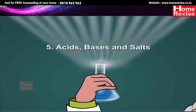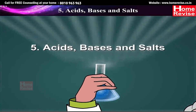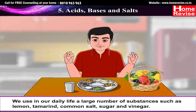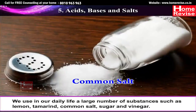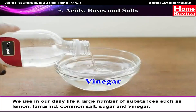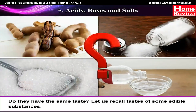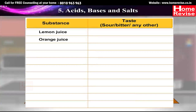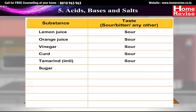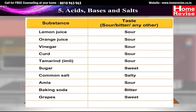Chapter 5: Acids, Bases and Salts. Introduction. We use in our daily life a large number of substances such as lemon, tamarind, common salt, sugar and vinegar. Do they have the same taste? Let us recall the tastes of some edible substances: lemon juice, orange juice, vinegar, curd, tamarind are sour in taste; sugar is sweet; common salt is salty; amla is sour; baking soda is bitter; grapes are sweet; unripe mango is sour.